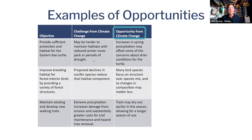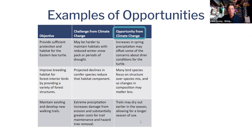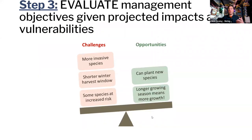It might be harder to maintain habitats because of winter snowpack, but increased precipitation can offset some concerns about drier conditions for the turtle. You may have projected declines in conifer species for forest interior birds, but some of these birds aren't relying necessarily on the conifer mix — more on the structure of the forest. And it gets down to which forest interior birds are you talking about, or is your objective really about forest interior birds in general? With the walking trails, there might be a longer season of use, and that may be an opportunity from the point of access. Once you have your conservation challenges and opportunities, you start to weigh those and compare them to see how they stack up.